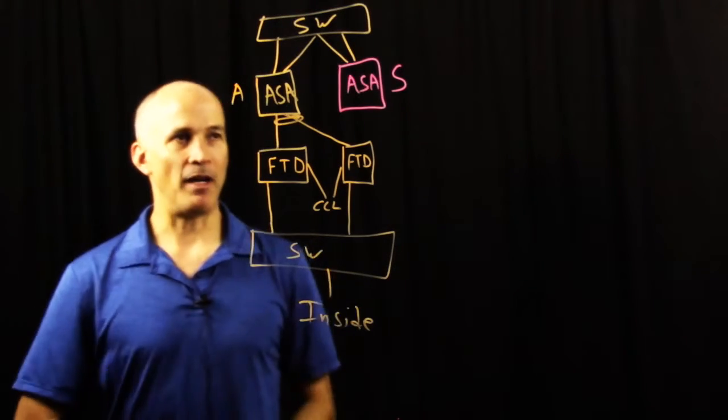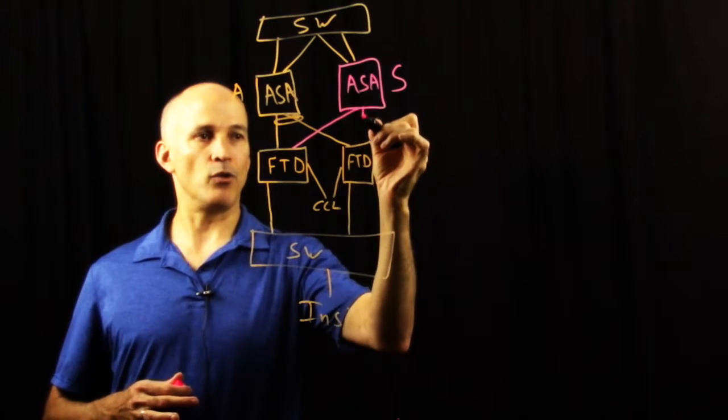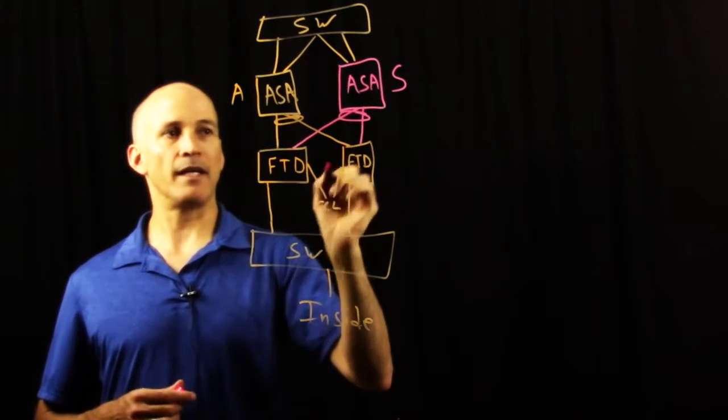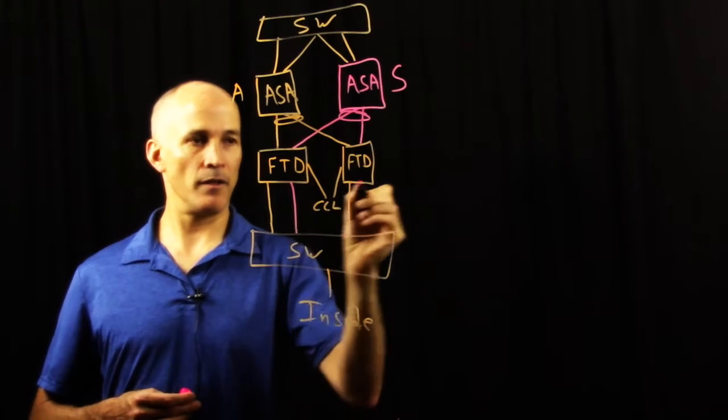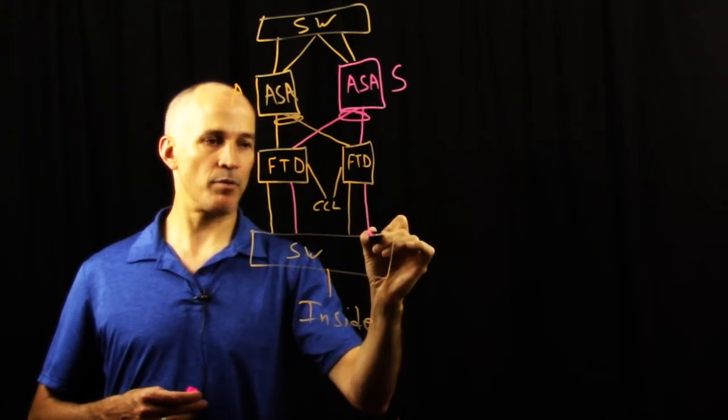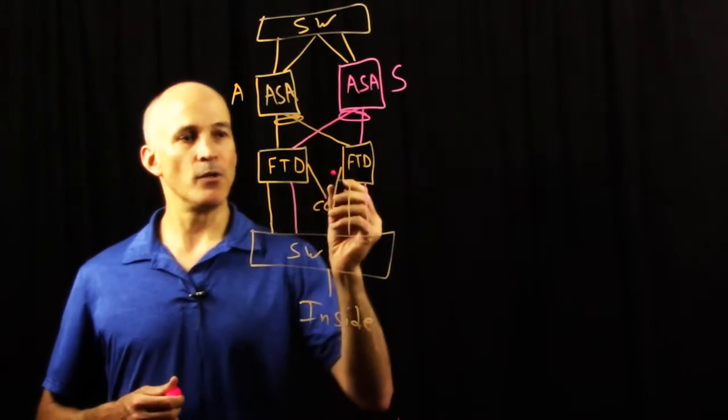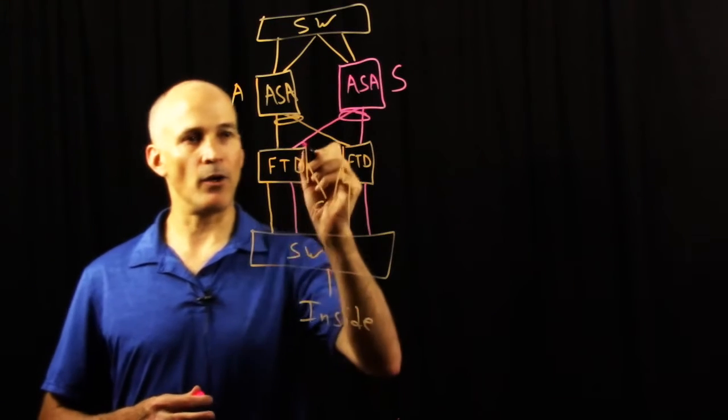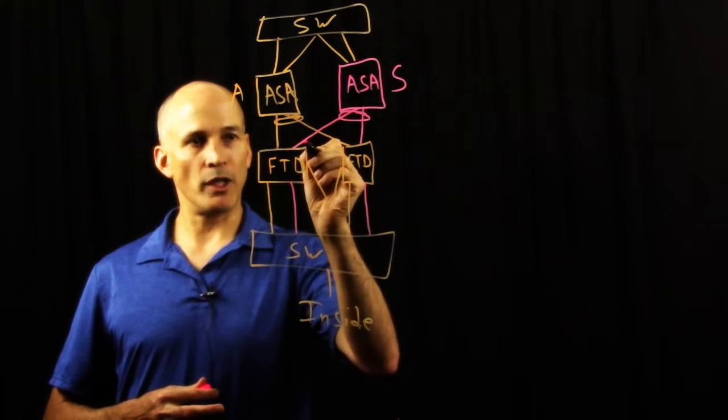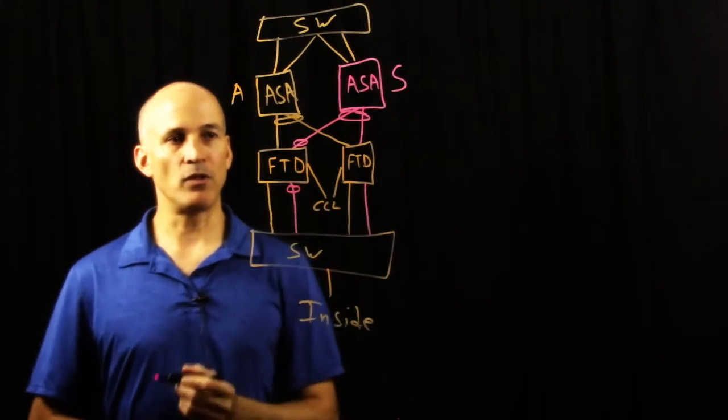For the standby path I'm going to again draw it in a different color. So the standby path again dual connects the ASA to both FTDs and brings a separate pair of interfaces off to the switching environment as well. On FTD, because these devices are interface paired...